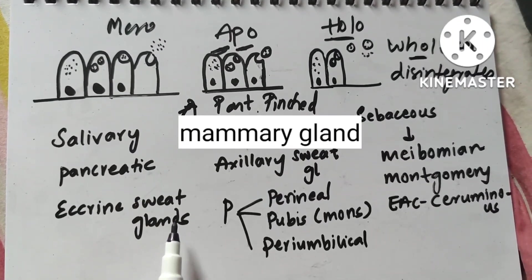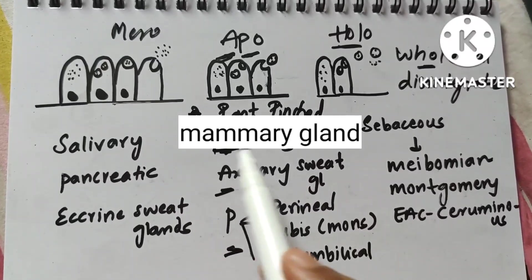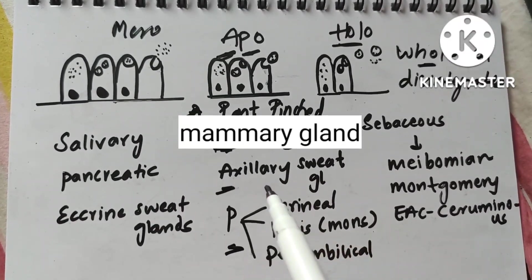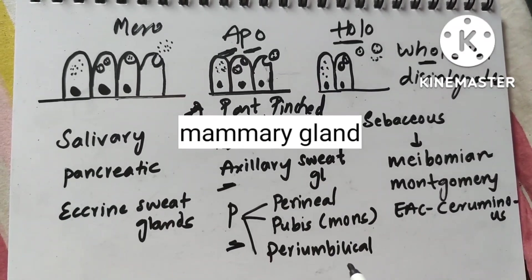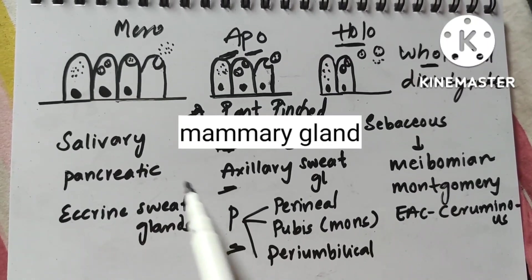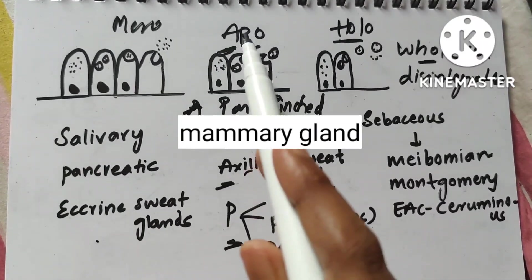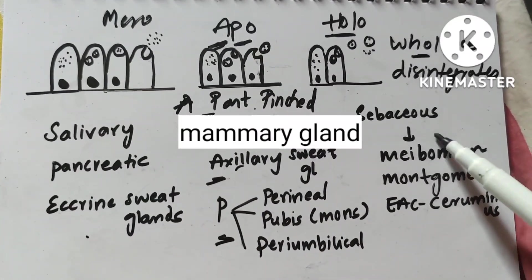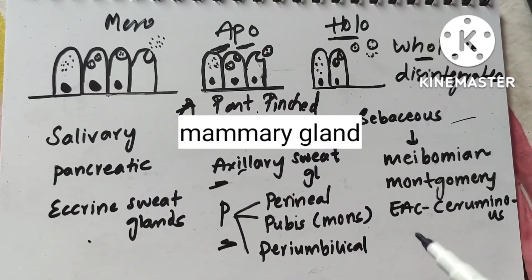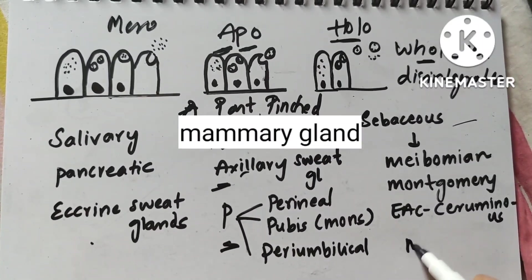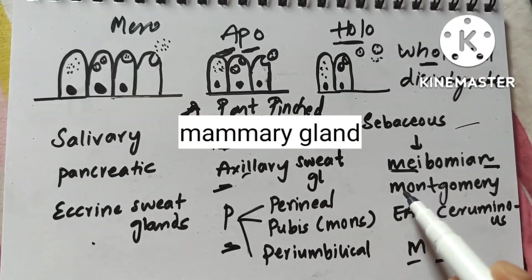Coming to apocrine glands, the examples can be remembered as MAP: M for mammary gland, A for axillary sweat gland, and P for perineal gland, mons pubis and peri-umbilical glands. Coming to holocrine glands, they have MN in their names — Meibomian has MN, Montgomery has MN, and ceruminous glands of the external auditory canal also has MN in their names.